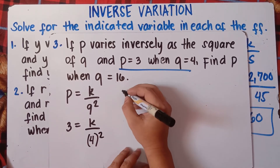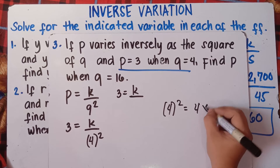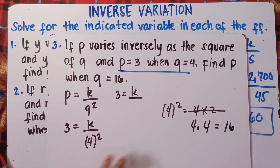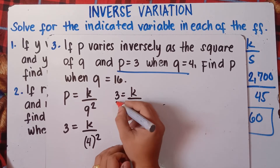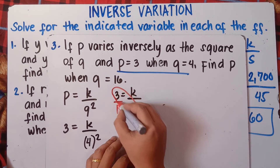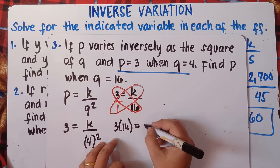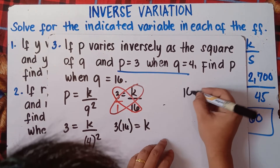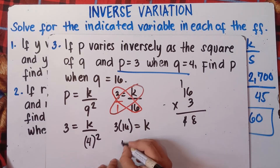This gives 3 equals k over 4 squared. Now, 4 squared means 4 times 4, which is 16 — do not confuse this with 4 times 2. So 3 equals k over 16. Cross multiply: 3 times 16 equals k times 1. 3 times 16 is 48, so k equals 48.